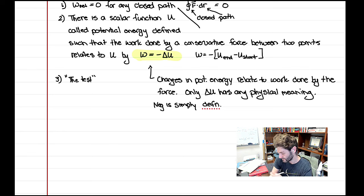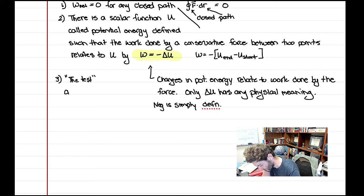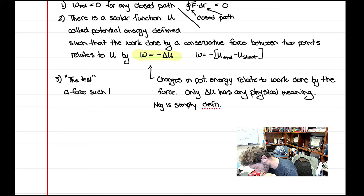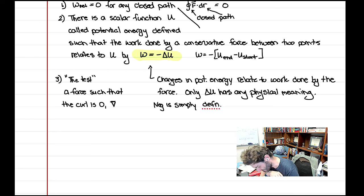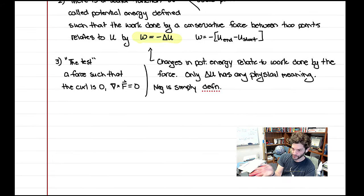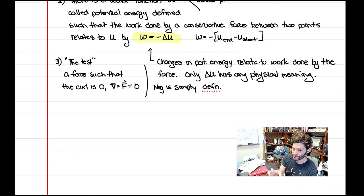Property three — the test for whether a force is conservative — is that the curl of the force equals zero: ∇ × F = 0. This is a calc 3 topic involving nabla (the upside-down triangle) crossed with the force. There is a mathematical operation you can do with the force to determine if it's conservative, and it's often the easiest way to show conservatism.